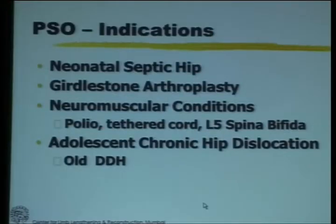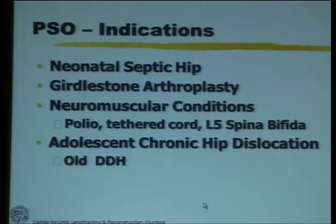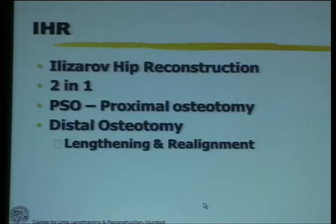The indications for the Elisarov or the pelvic support osteotomy are most commonly a neonatal septic hip. It can be used when you have done a Girdlestone arthroplasty where the hip is very unstable. In certain neuromuscular conditions like polio where the hip is unstable, and probably with a guarded prognosis, a relatively unclear indication is adolescent hip dislocations who are past the age of doing anything for the hip from the pediatric standpoint and are too young for any kind of arthroplasty.